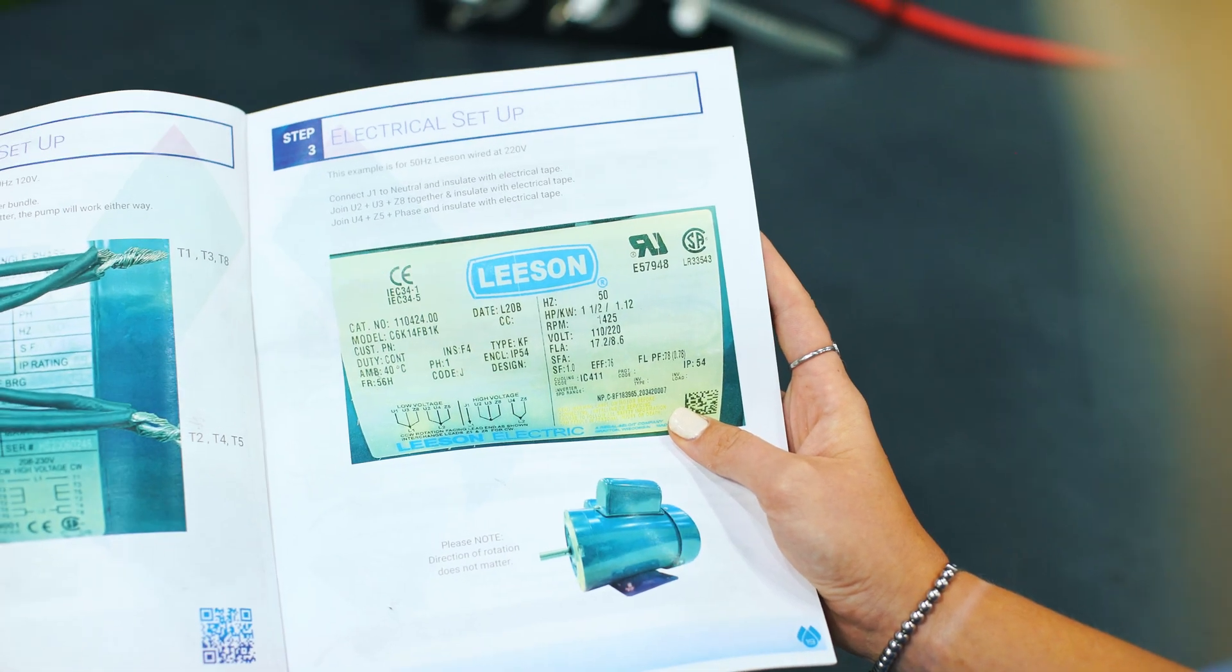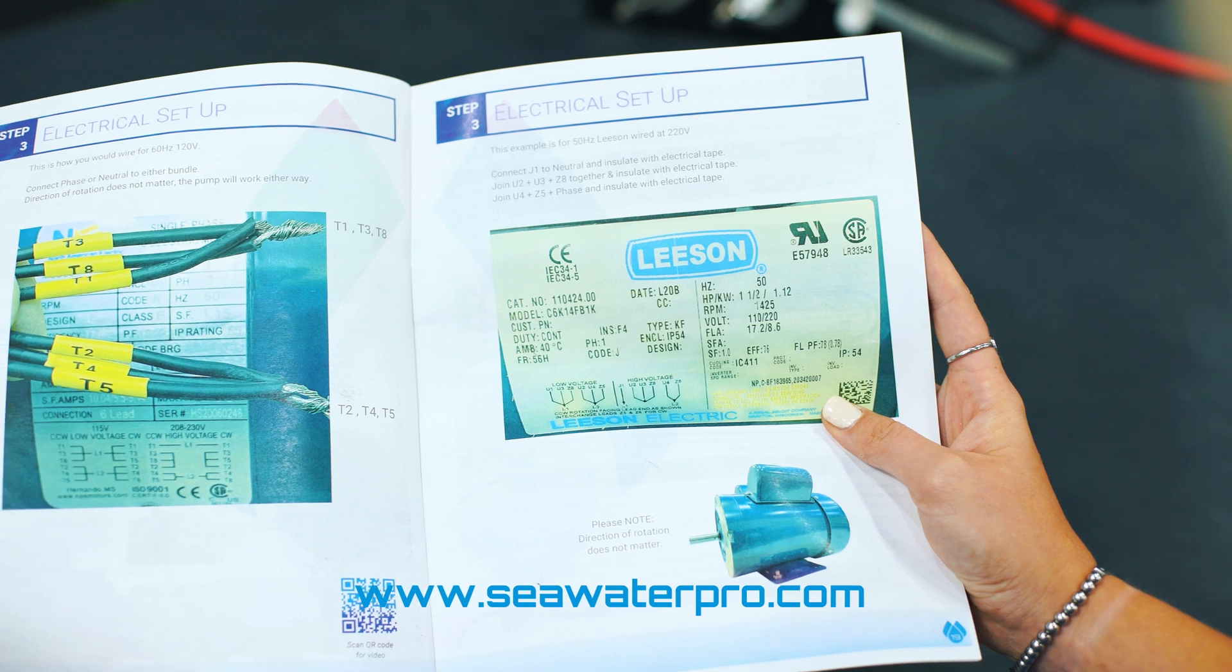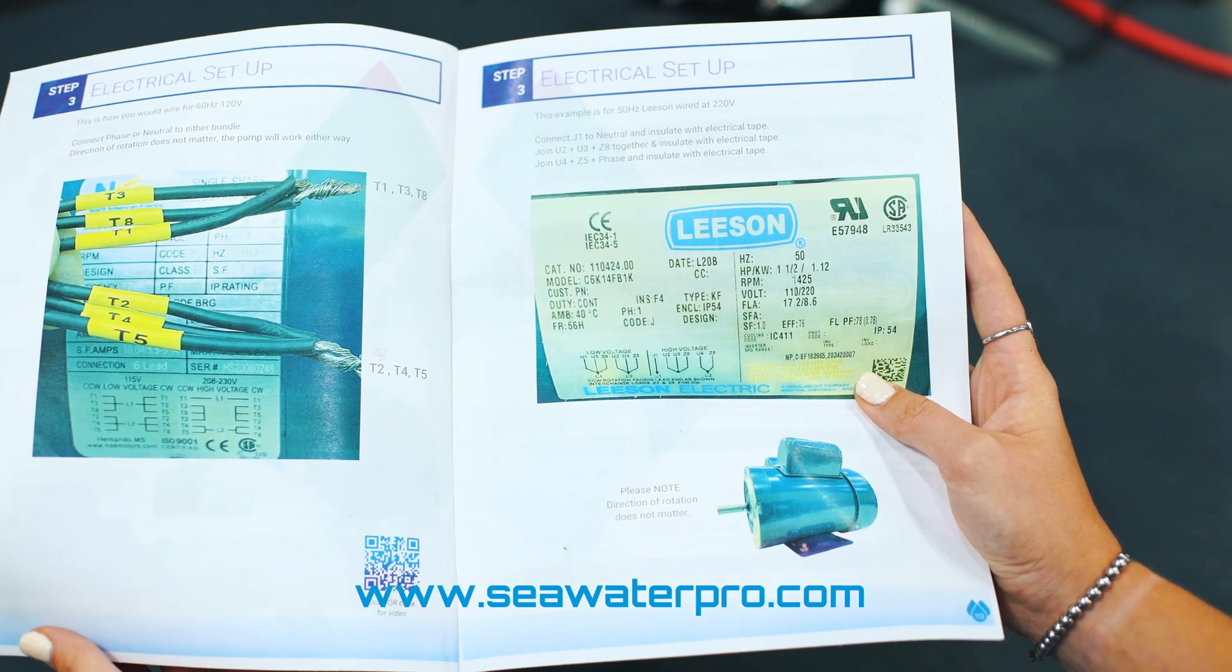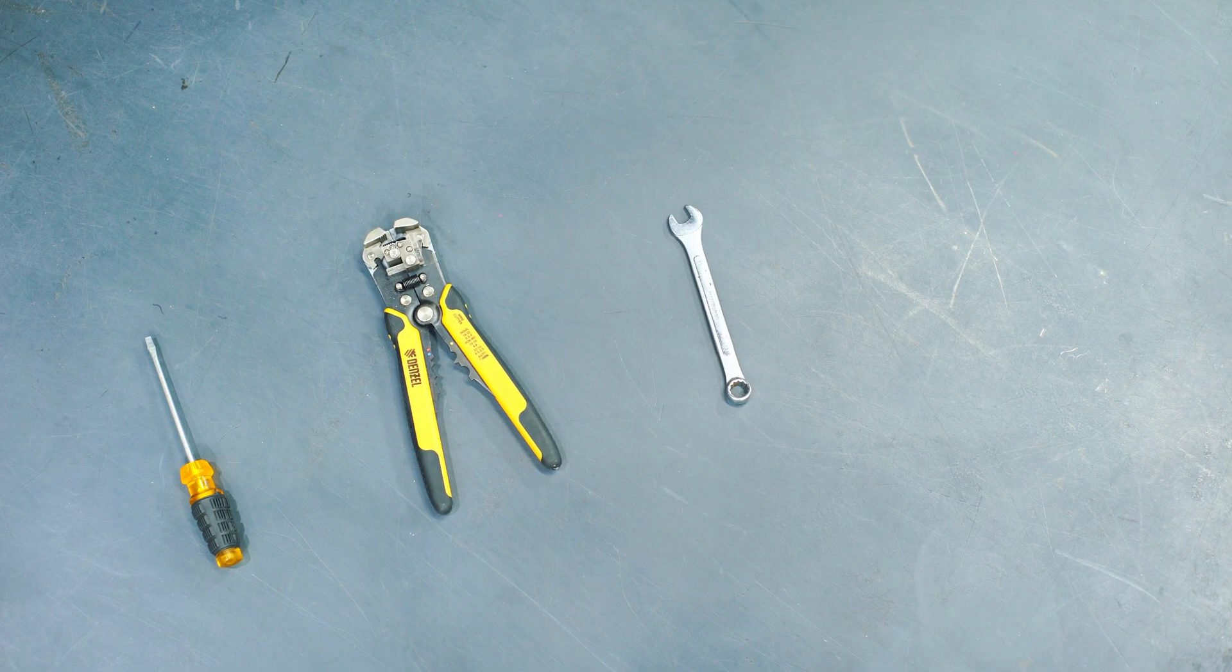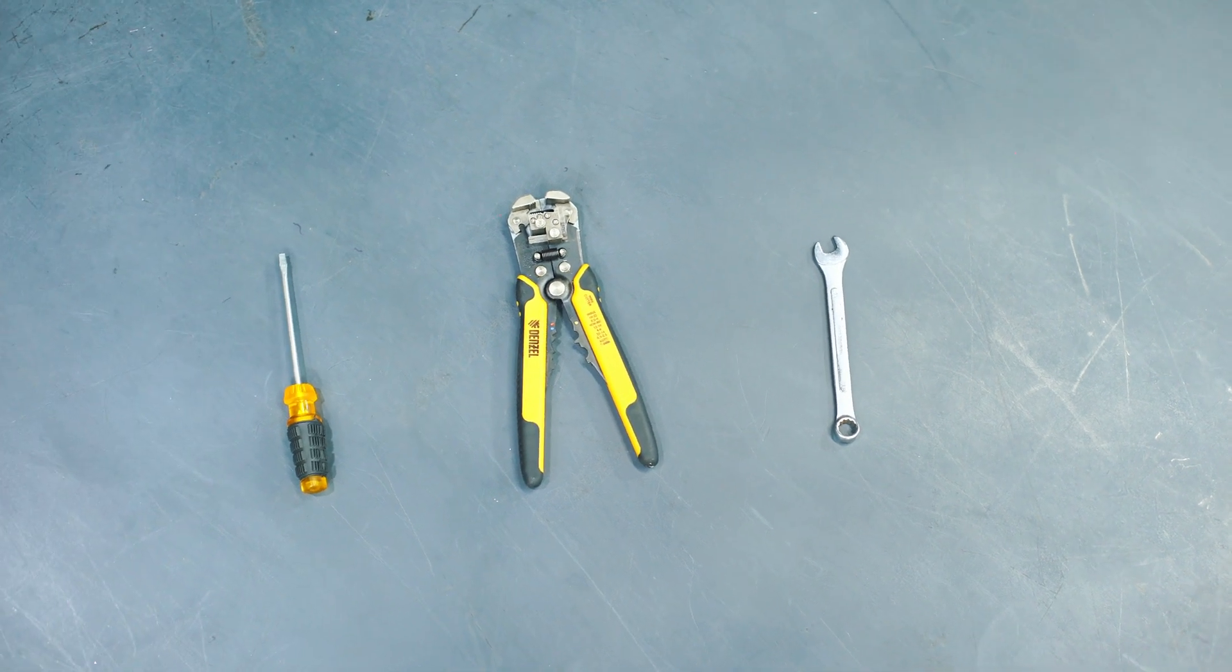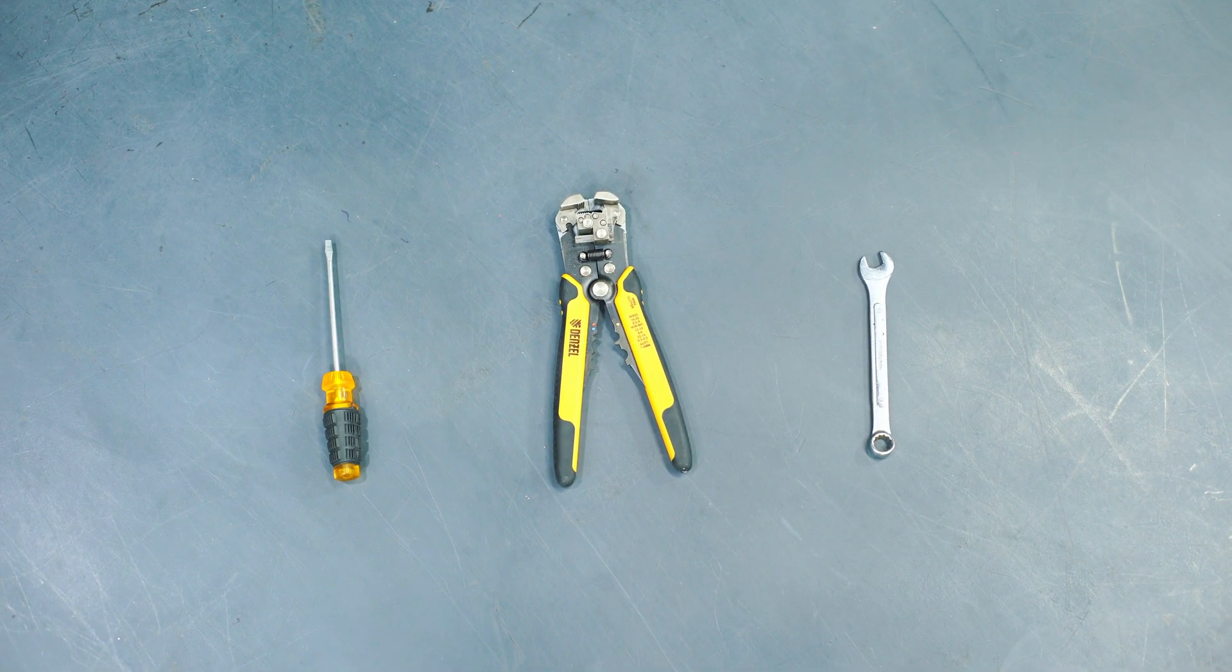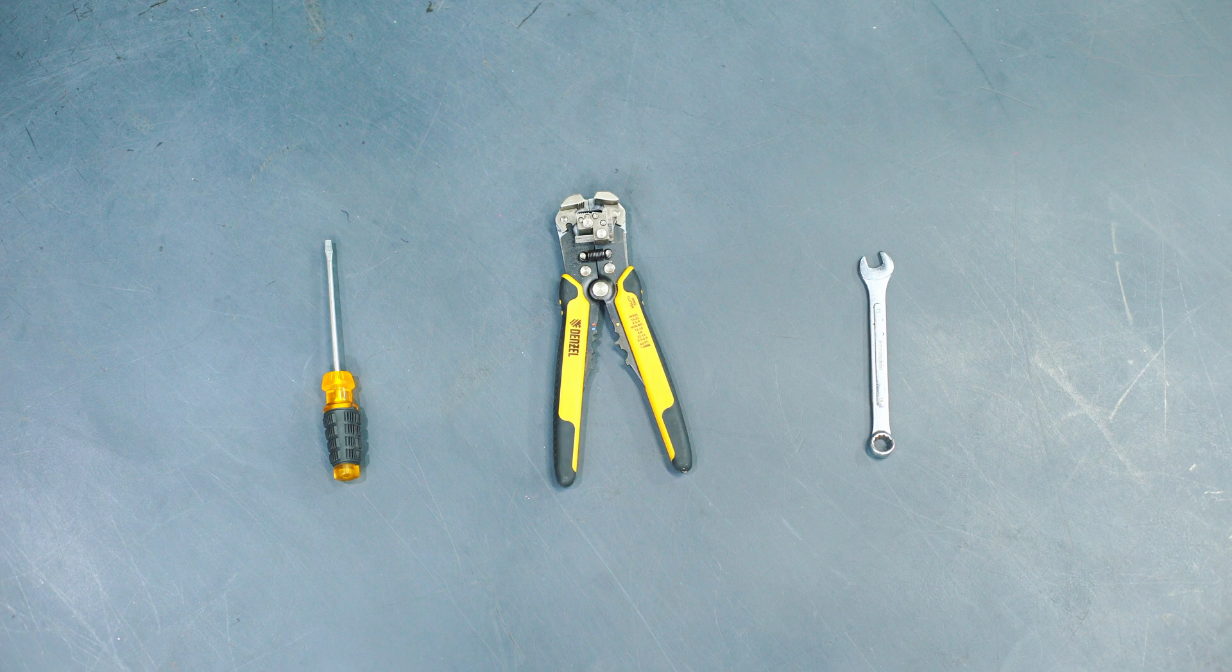For additional guidance, please refer to the electrical setup in the manual by visiting www.seawaterpro.com or calling us. The tools you will need for this assembly are a flathead screwdriver, 11mm wrench, wire stripper, crimps and wire caps are optional but recommended.